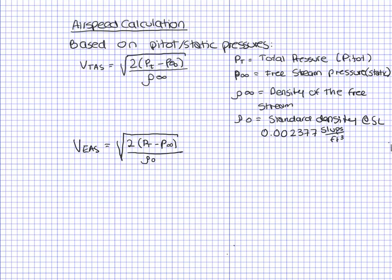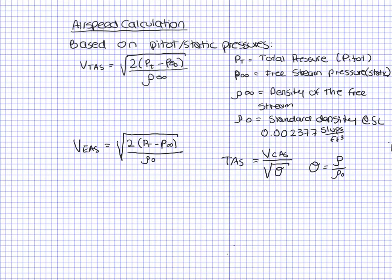The difference between true airspeed and equivalent airspeed is that equivalent airspeed is corrected for compressibility, while true airspeed is corrected for non-standard density conditions. True airspeed is divided by the density of the free stream, and equivalent airspeed is divided by standard density. True airspeed can also be calculated as calibrated airspeed divided by the square root of the density ratio, which is rho over rho-zero — the ratio of the density where you're flying divided by the standard sea level density.